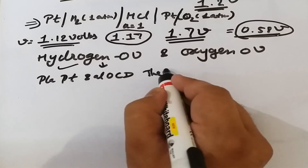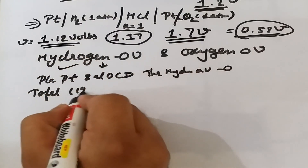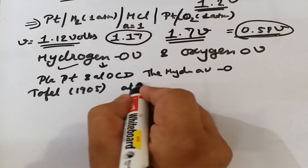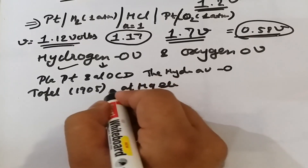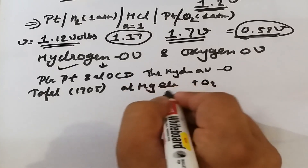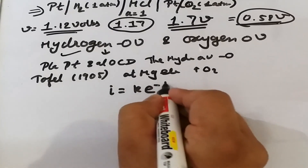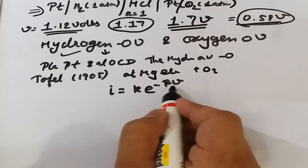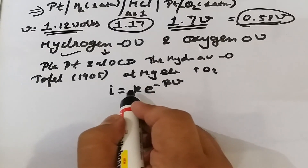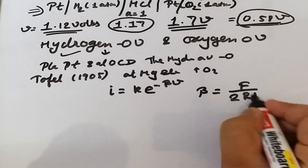Generally, in the case of platinized platinum at zero current density, the hydrogen overvoltage is zero. In 1905, Tafel gave a relation to measure the hydrogen overvoltage at a mercury electrode in a solution freed from oxygen. The hydrogen overvoltage is given by: i = k · e^(−βV), where i is the current, V is the potential of the cathode, k is an empirical constant, and β = F / (2RT).